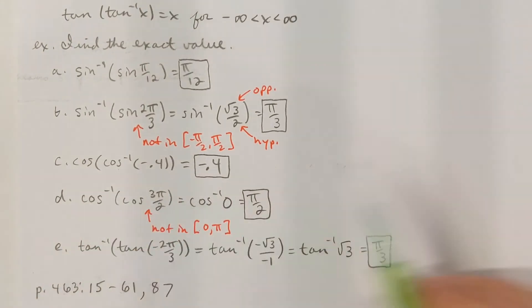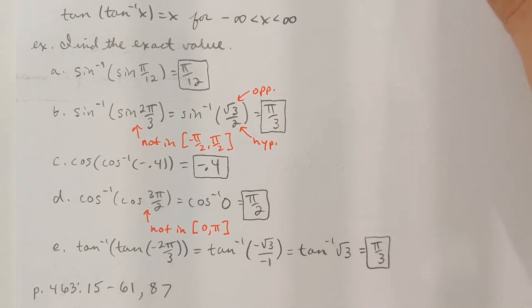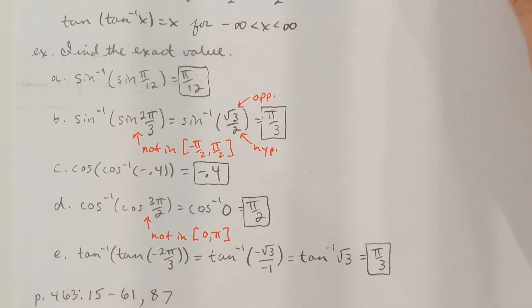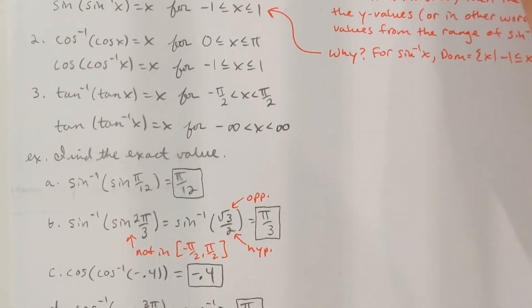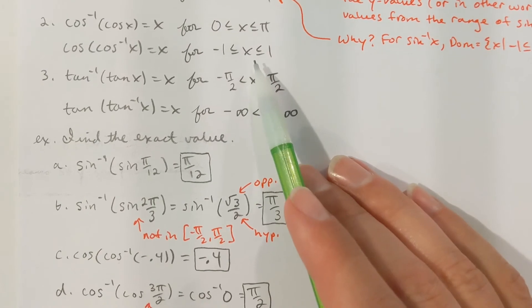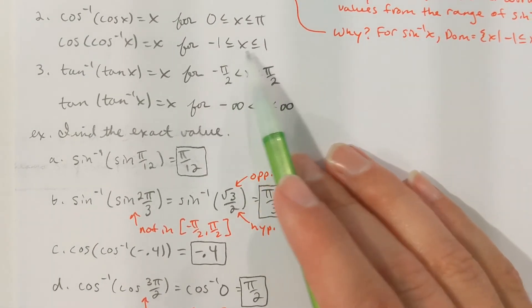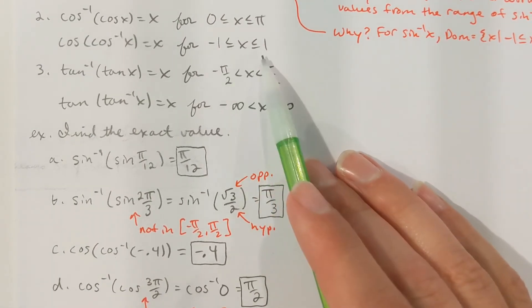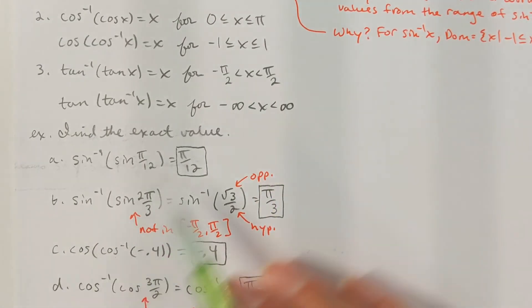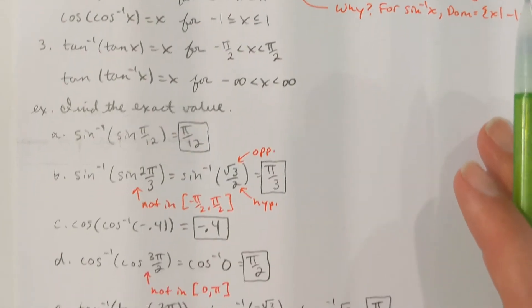Part C: cosine of cosine inverse of negative 0.44. That's going to be negative 0.44, because negative 0.44 is between negative one and one, so it's just a go-right-to-the-answer type deal.